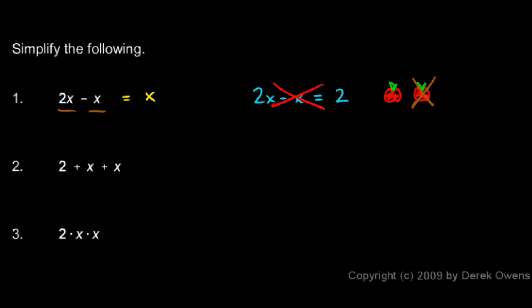Think of these as like terms. They're both x terms. You can think of this as 2x minus 1x, and that's the same as, if we factor this, 2 minus 1 times x, or just x. So I've kind of belabored that point, but that one's critical to understand.